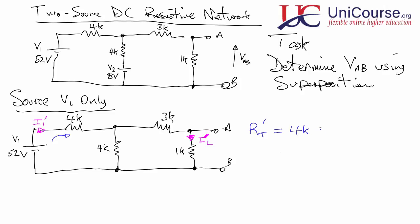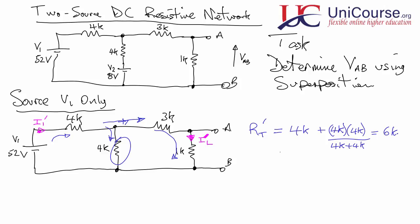Traveling from V1 we see the 4k resistor, then the path splits. Going right, you journey through a 3k and a 1k — that's 4k — which is in parallel with the other 4k path. So RT' = 4k + (4k × 4k)/(4k + 4k) = 4k + 16M/8k = 4k + 2k = 6 kilohms total.